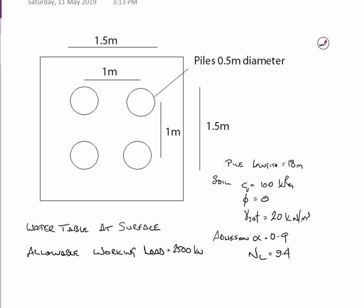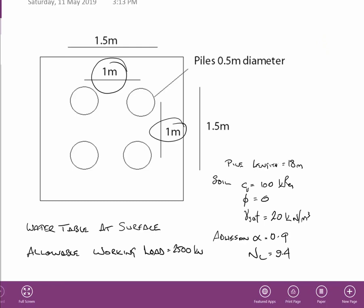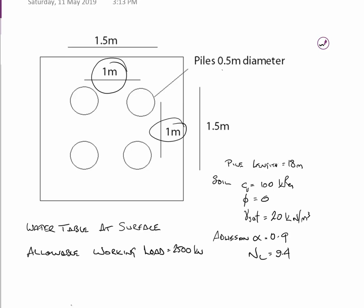We're just dealing with 4 piles. They're at a 1m spacing centre to centre. See it here and here. Which means from the outside edge of this pile to the left hand pile to the right hand side is 1.5m because the piles are 0.5m in diameter.